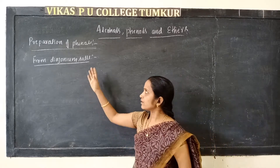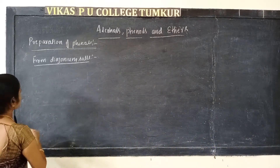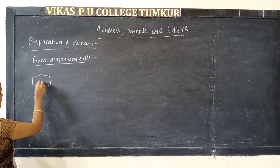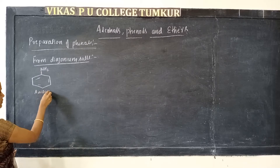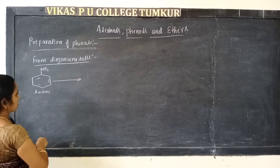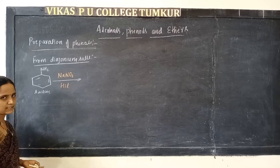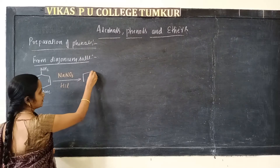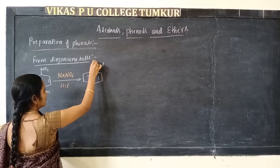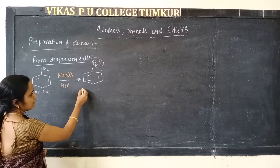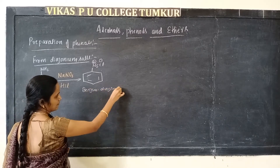This is the preparation of phenol from diazonium salts. Primary aromatic amine means aniline. Aniline is treated with sodium nitrite (NaNO₂) and hydrochloric acid. The product we obtain is benzene diazonium chloride. This compound is called benzene diazonium chloride.